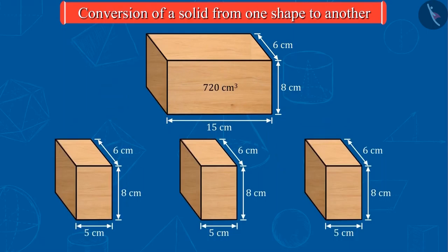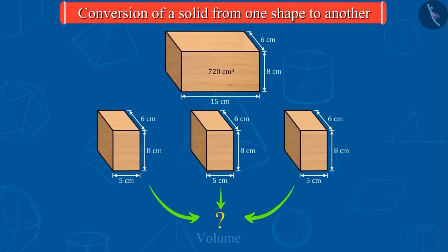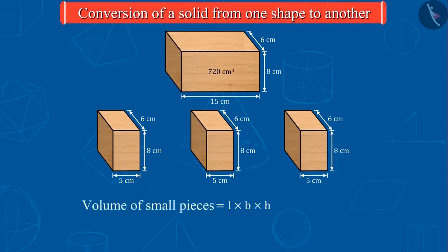If this piece of wood is cut into 3 equal pieces like this, can you find the volume of each small piece? Well done! The volume of each small piece is 240 cm³.